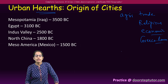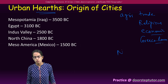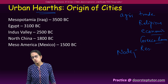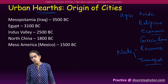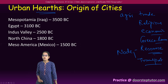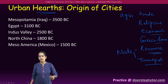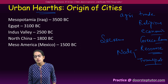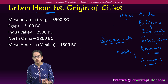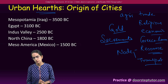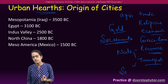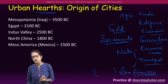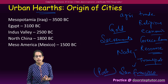Cities can be classified based on two nodes: the resource node and the transport node. A resource node is where a resource is found — for example, the gold rush happened in Sacramento, California, because gold was found there. The other is the transport node; for example, San Francisco is considered a major port of California.